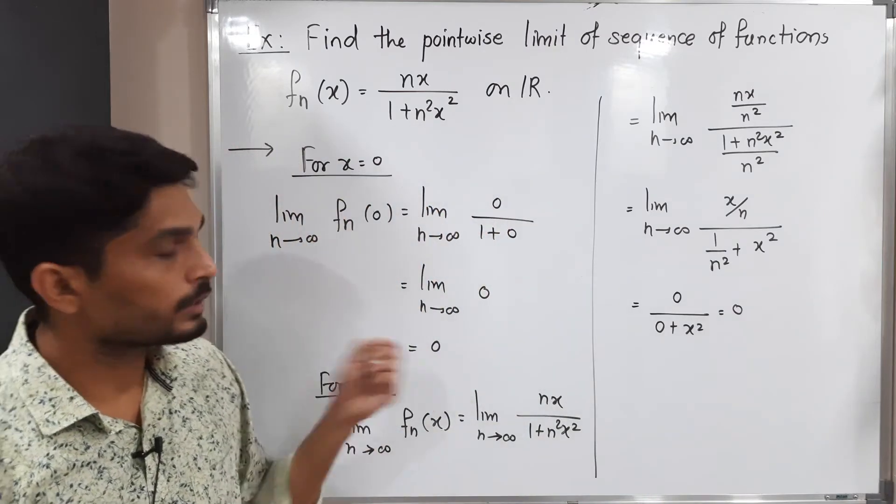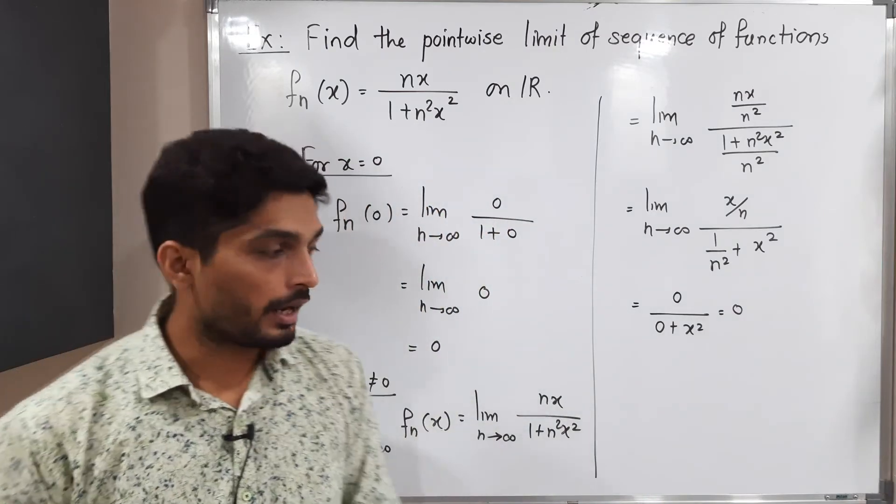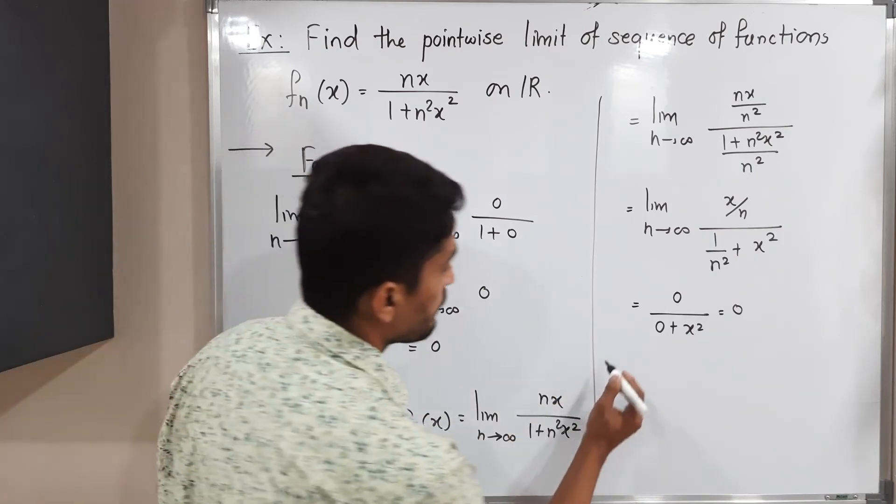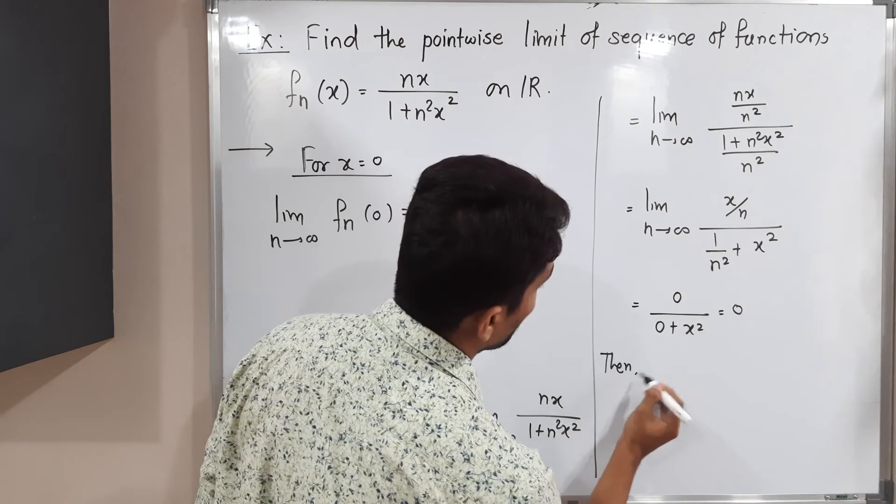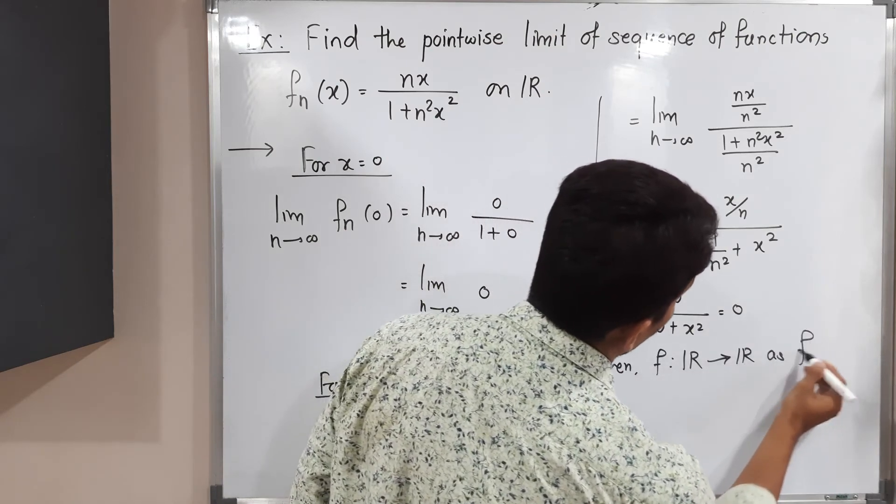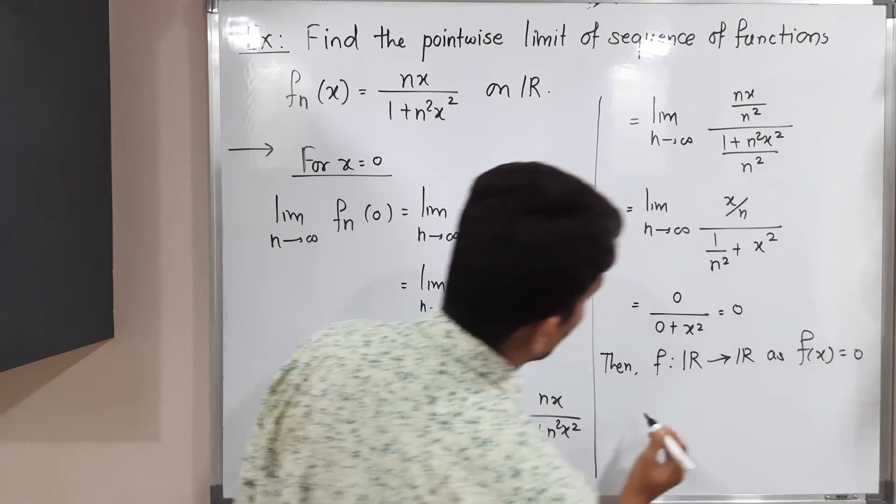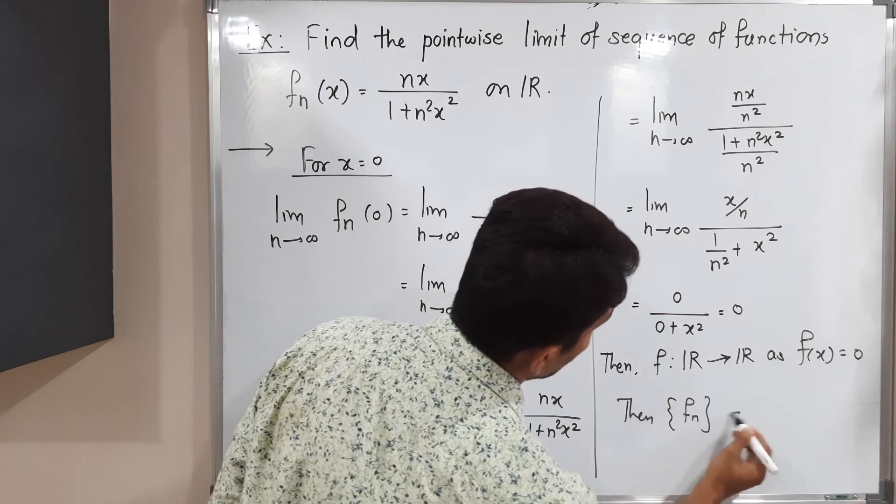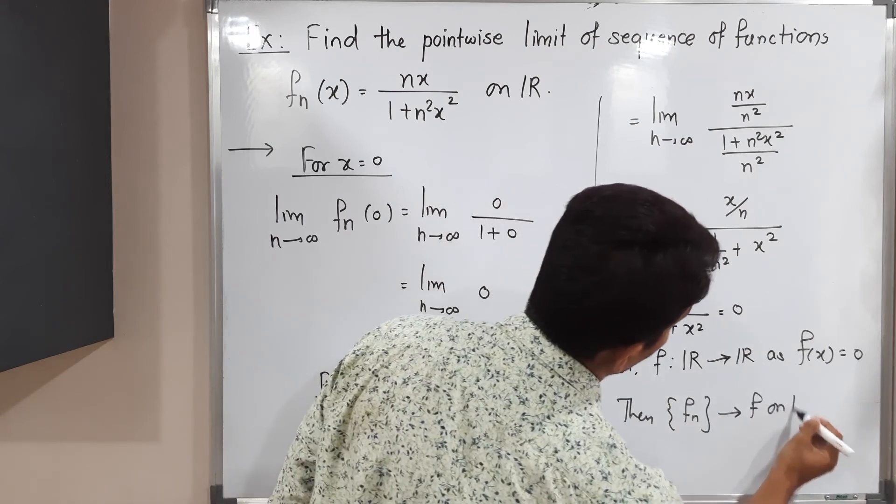That means if x=0 then also we are getting limit 0, and if x is not equal to 0 then also we are getting limit 0. So therefore, if I define f from ℝ to ℝ as f(x)=0, then that sequence of functions f_n converges to f on ℝ.